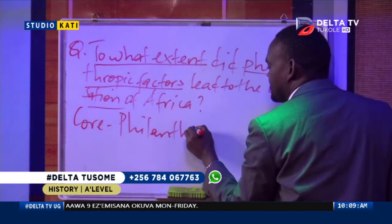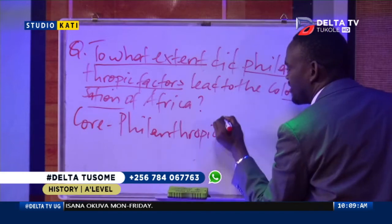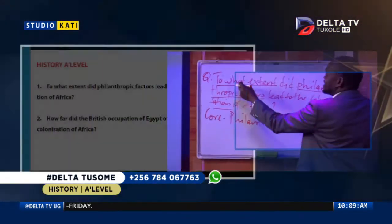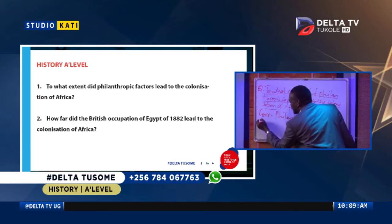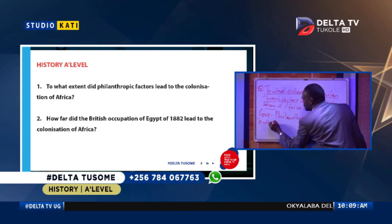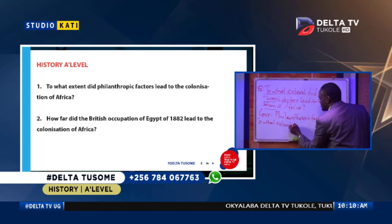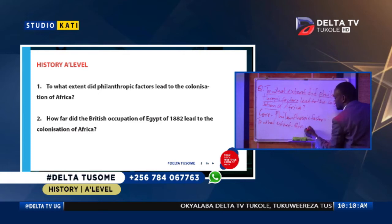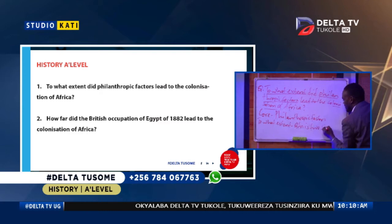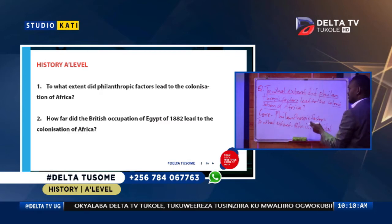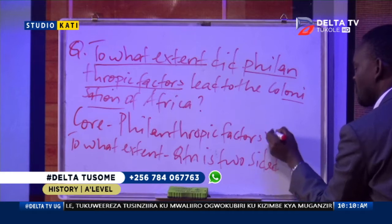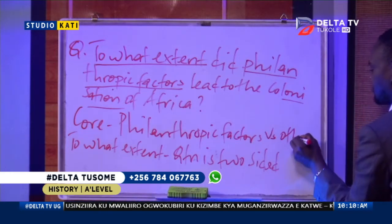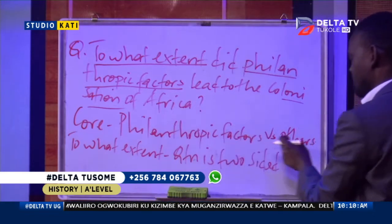We are underlining philanthropism because it is the core of the question. To what extent guides us, giving us the right approach and interpretation. To what extent simply indicates that the question is two-sided — one part addresses the philanthropic factors, and on the however side we have other factors. So it is philanthropism versus others.